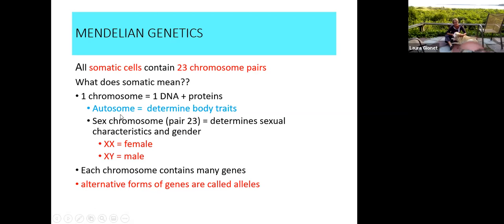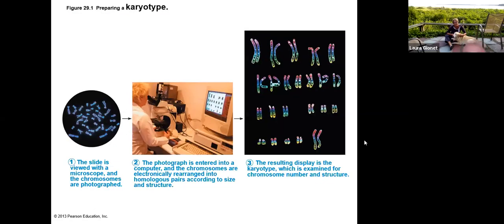Autosome means we are determining body traits. The sex chromosome determines gender. The first 22 pairs determine body traits, and the last pair — the combination you inherit from your parents — will determine gender: if you inherit X and X, you're female; X and Y, you're male. Alternative forms of genes are called alleles. A karyotype is like a map or display of the chromosomes — your 23 pairs lined up starting at one and ending in 23.